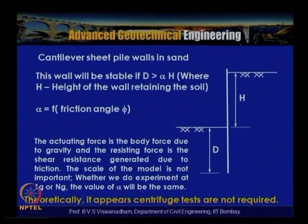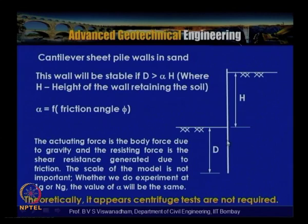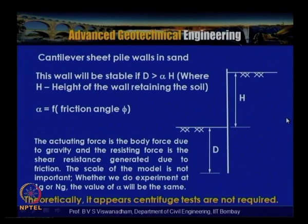There are two types of sheet pile walls: very flexible and rigid. For a rigid sheet pile wall, the wall rotates about a pivotal point above the toe. For a very flexible sheet pile wall, buckling failure can occur and permanent hinge formation can develop at the point of maximum bending moment. Theoretically, for cantilever sheet pile walls in sand, centrifuge model tests are not warranted as long as d is greater than alpha h, where alpha is a function of friction angle phi.